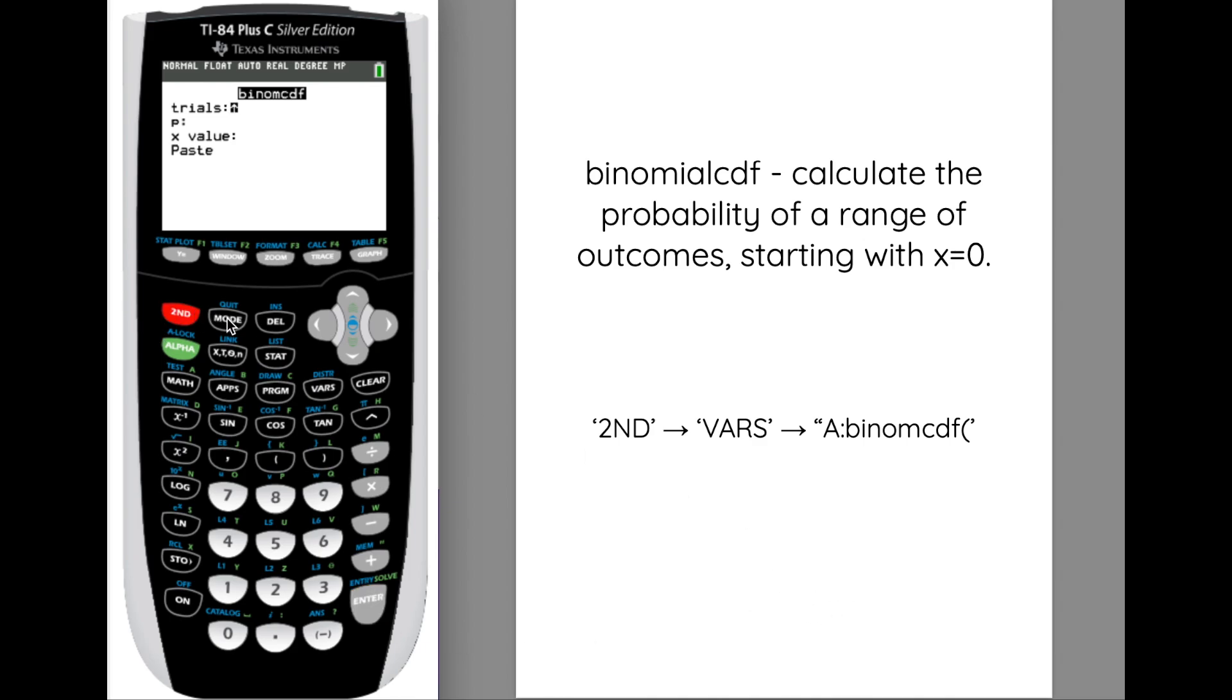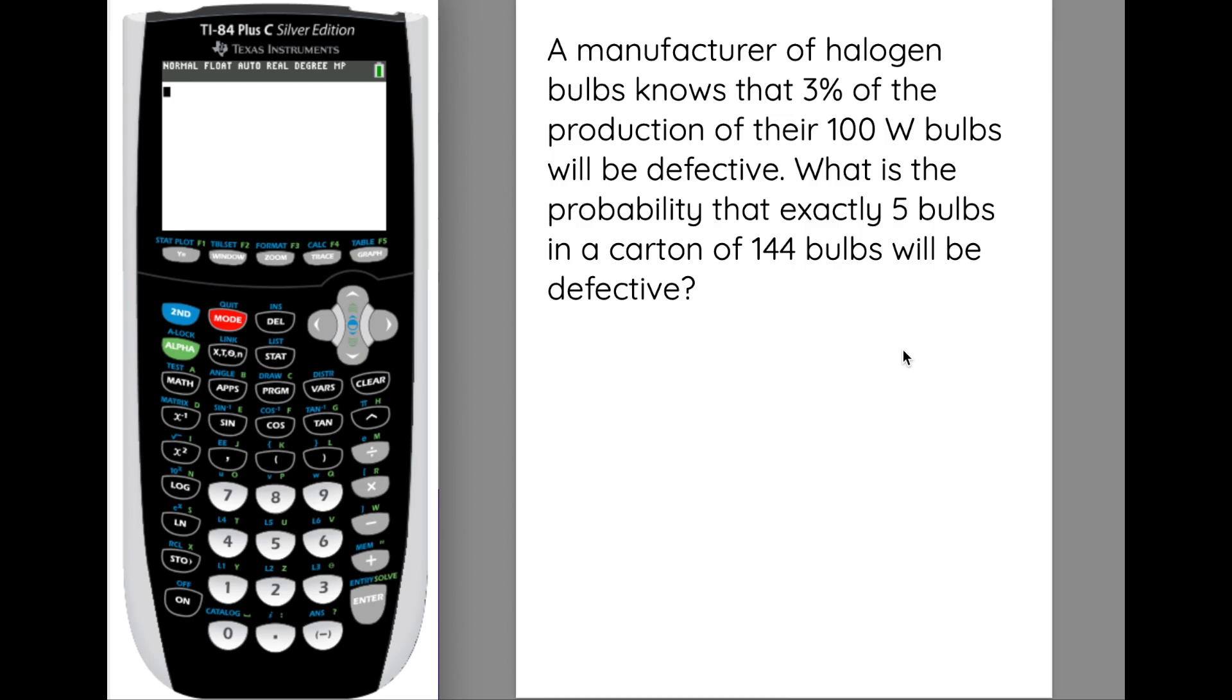So we'll do a couple examples here and see how it works. We have a manufacturer of light bulbs, and three percent are defective. They're saying, what is the probability that exactly five bulbs in the carton of 144 will be defective? And so the word exactly there, that gives you a good clue that you're using binomial PDF because it's just one value.